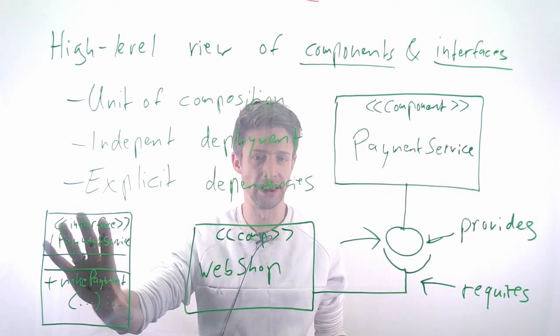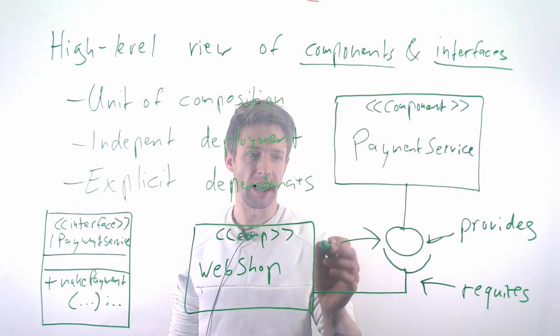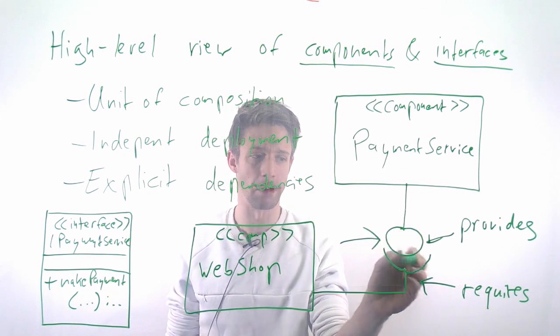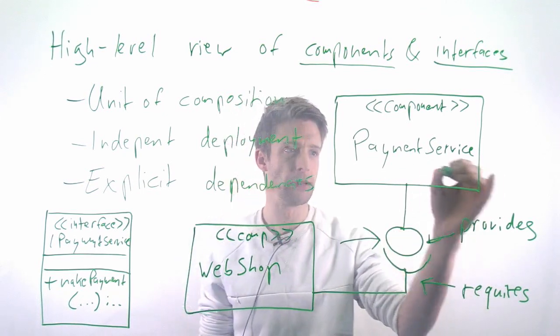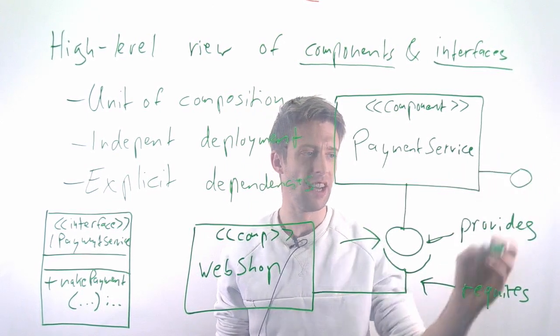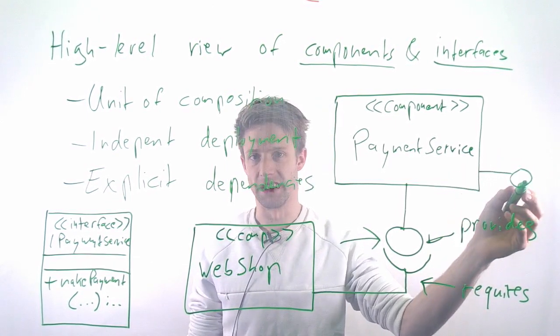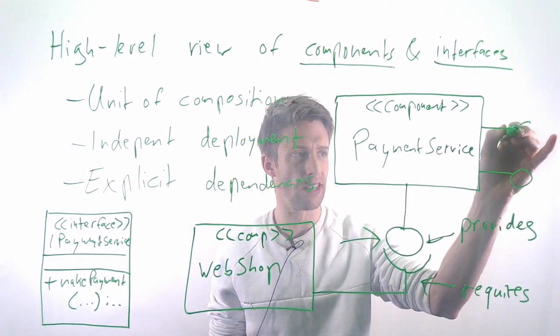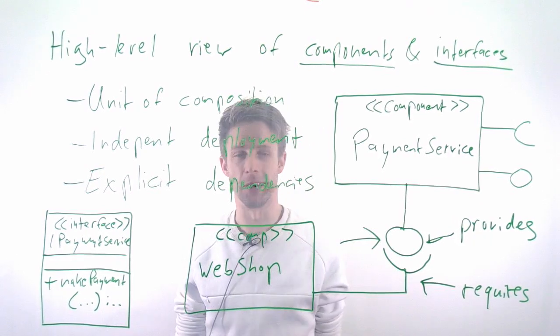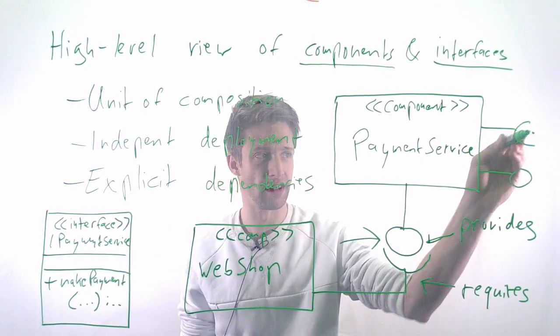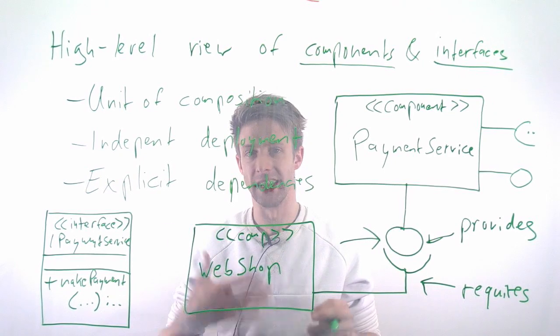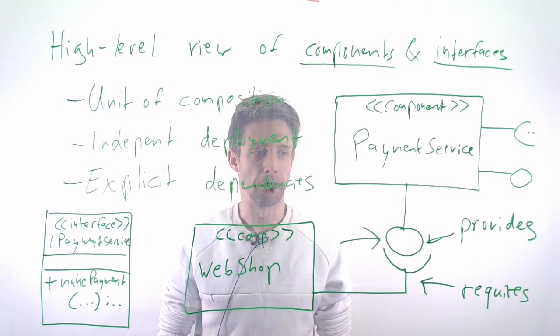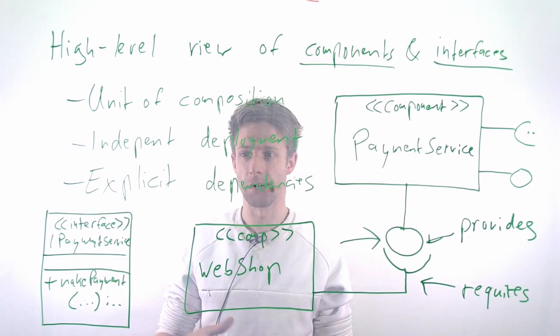There's nothing that says a component cannot have multiple provides or multiple requires. The payment service could have another interface that provides some other functionality, for example, for a bank to interact with it, or it could actually require something else. If you want to have a fully functional system, you actually have to have some kind of component that provides this functionality.